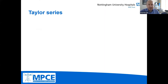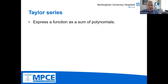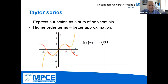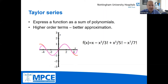Just to remind you what a Taylor series is: we express a function as a sum of polynomials, and the higher order polynomials — the more terms we have — the better approximation the Taylor series is to the function. For example, the Taylor series of a sine wave: our first approximation could be a straight line, fitting the zero part quite nicely but not the curves. We add an x-cubed term, and that cubic curve fits better, then x to the power five, and when we add those together we get a better approximation. We can go on with more terms.